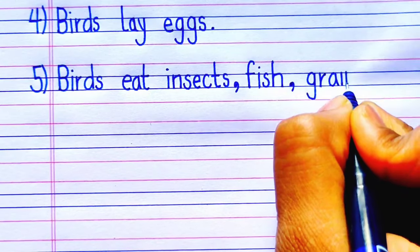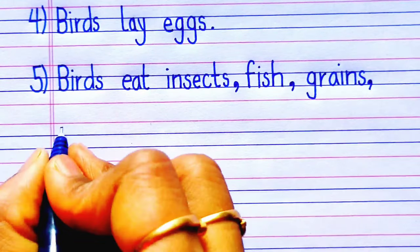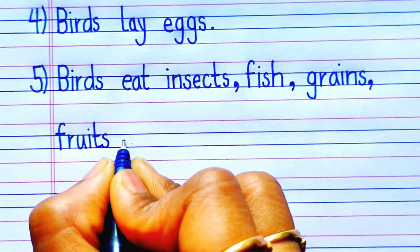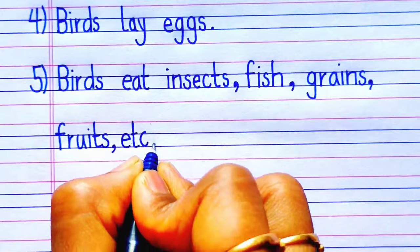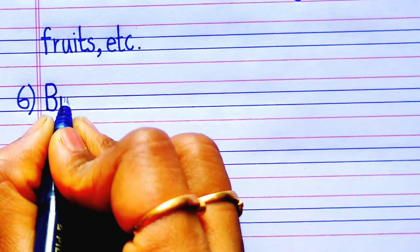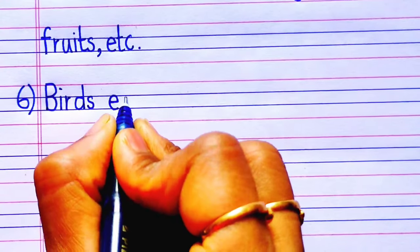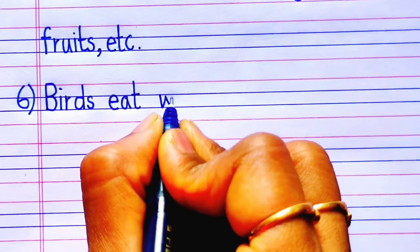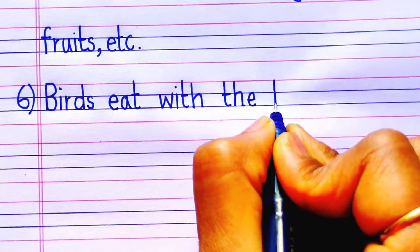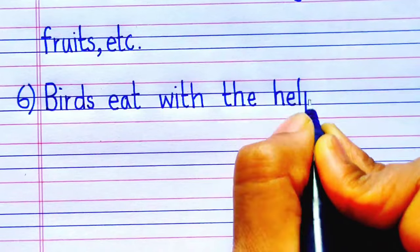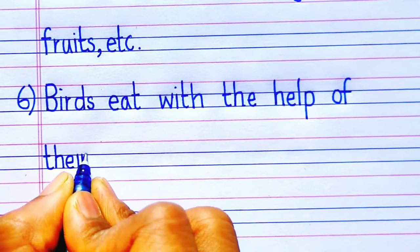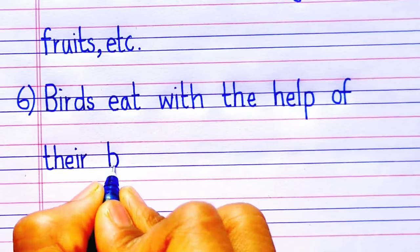The fifth sentence is: birds eat insects, fish, grains, fruits, etc. The sixth sentence is: birds eat with the help of their beak.